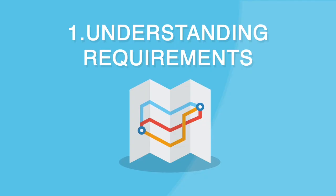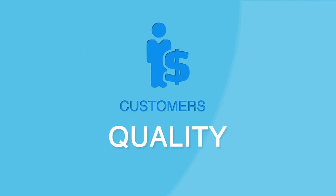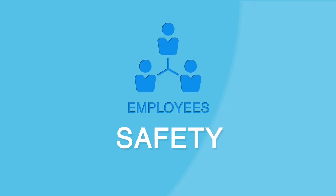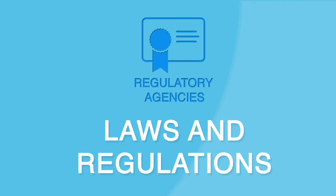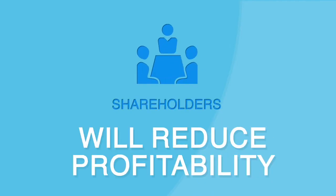A QMS does this by understanding the different requirements of each interested party. Your customer requires a certain level of quality or needs a specific quantity by a certain deadline. At the same time, your employees need a safe place to work, and the local government agency requires your organization to follow current environmental laws. Wasting time or money will reduce profitability and increase costs, which can have a negative impact on the longevity of your organization.